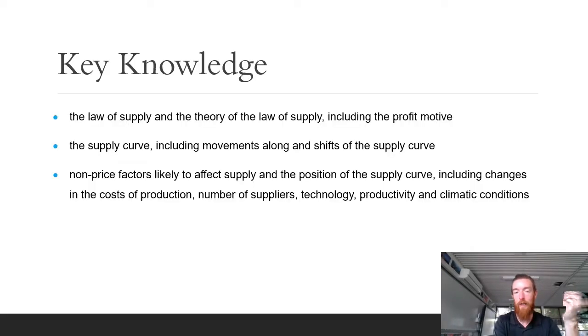So we're going to get straight into it with our key knowledge which is the law of supply, the theory of the law of supply including profit motive as we know businesses really want profit, and supply curve including movements along and shifts of the supply curve and the non-price factors that affect the supply and position of the supply curve including changes in cost of production, number of suppliers, technology, productivity and climatic conditions. So how all of those things without changing the selling price initially can change the overall quantity supplied.